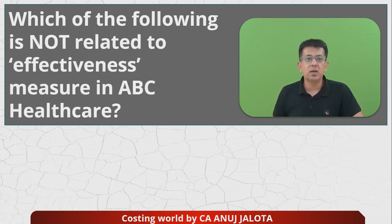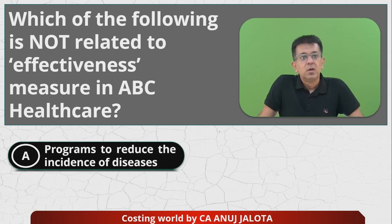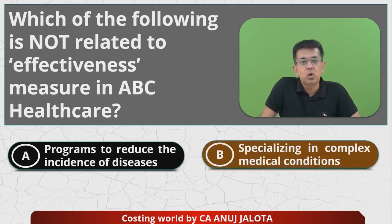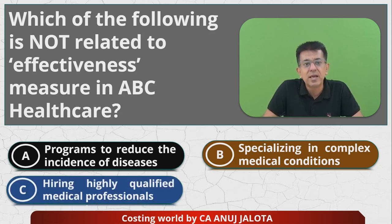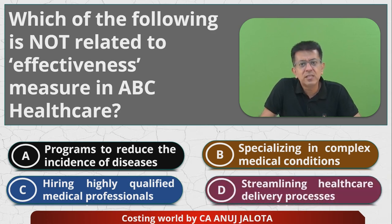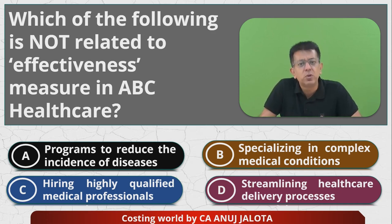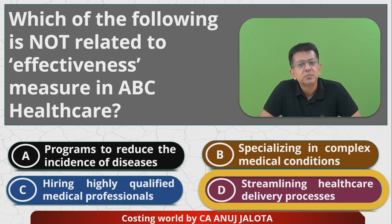Which of the following is NOT related to an effectiveness measure in ABC Healthcare? Option A — programs to reduce incidence of diseases — 100% related to effectiveness. Option B — specializing in complex medical conditions — 100% related to effectiveness. Option C — hiring highly qualified medical professionals — 100% related to effectiveness. Option D — streamlining the healthcare delivery process — this was related to efficiency, not effectiveness. So D is not related to effectiveness, and the answer is D.